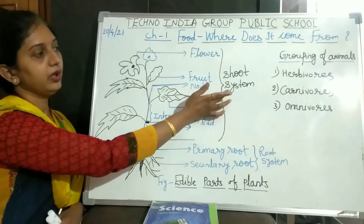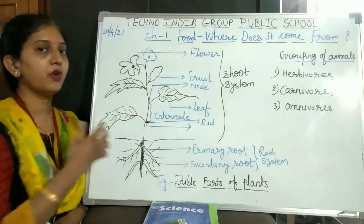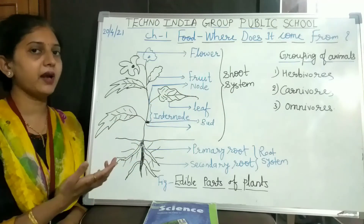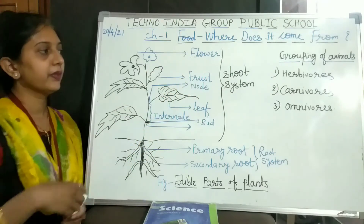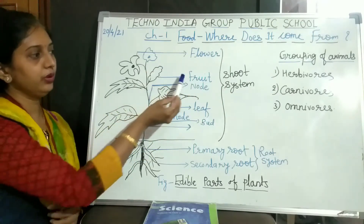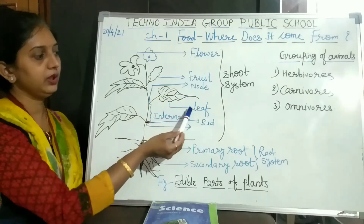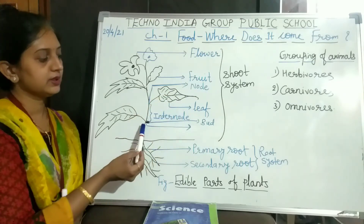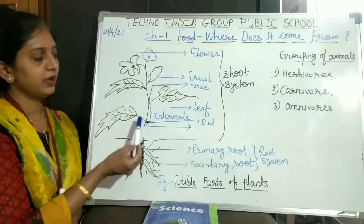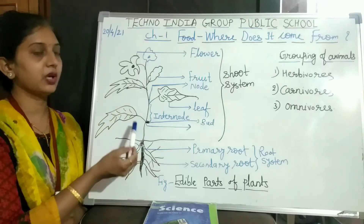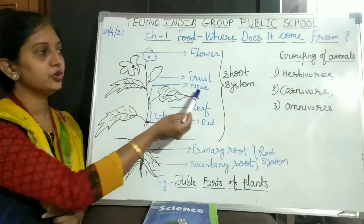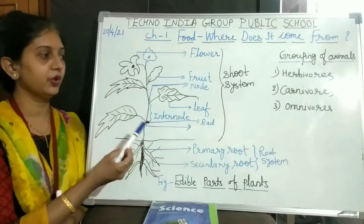So in the shoot system, what parts of the plant are included? Flower, fruit, leaves, and stem. These are the different parts of the plant which come under the shoot system.